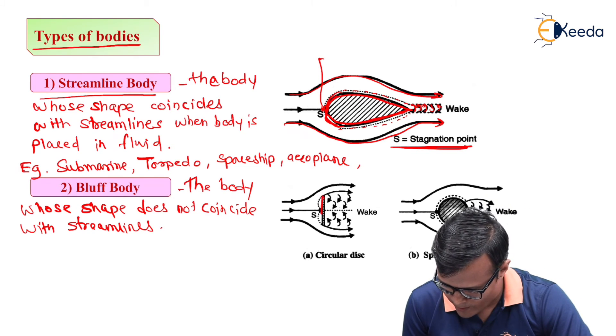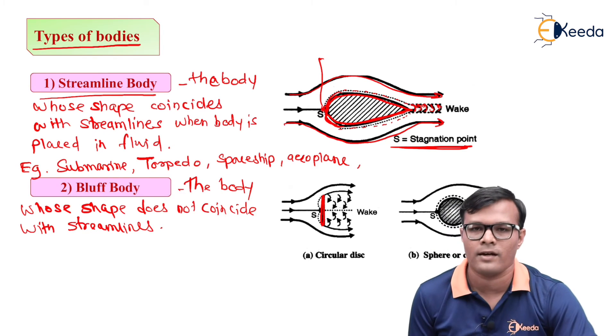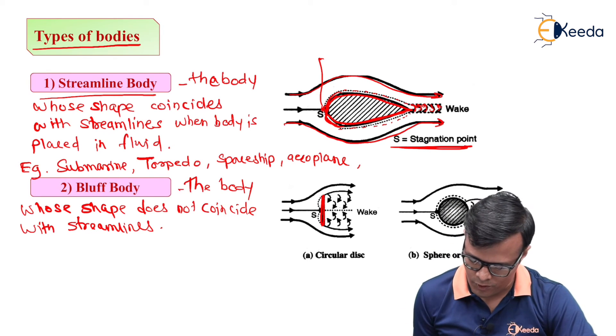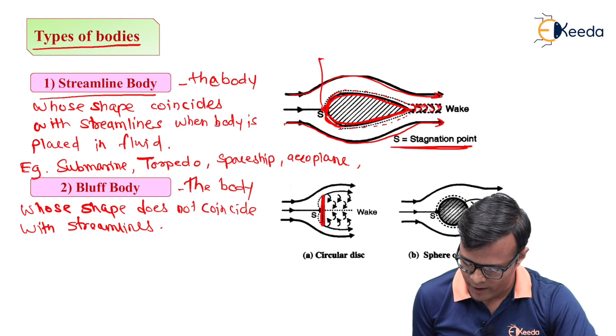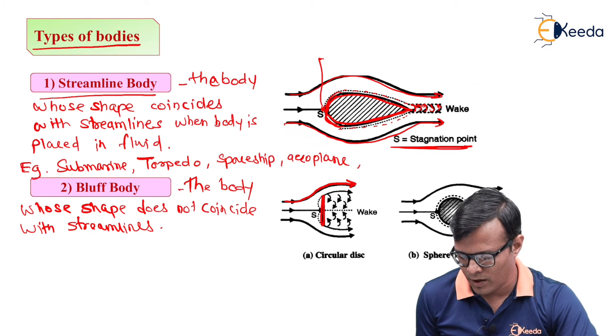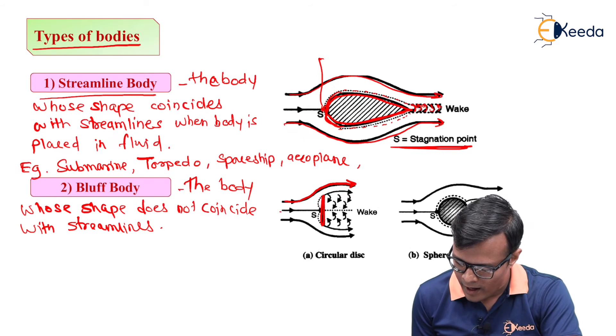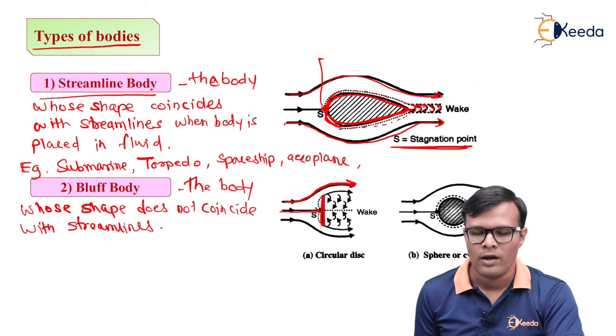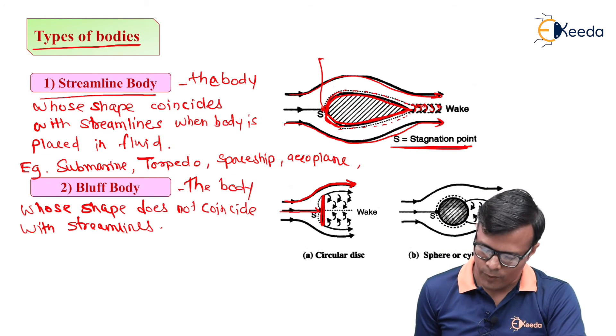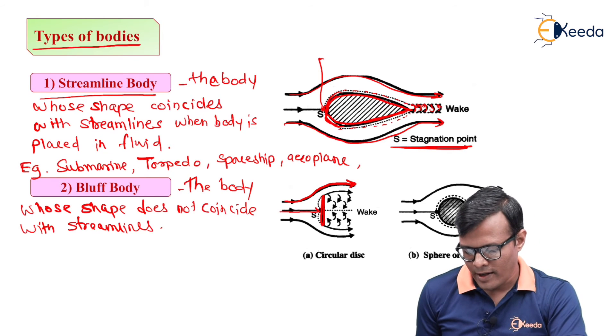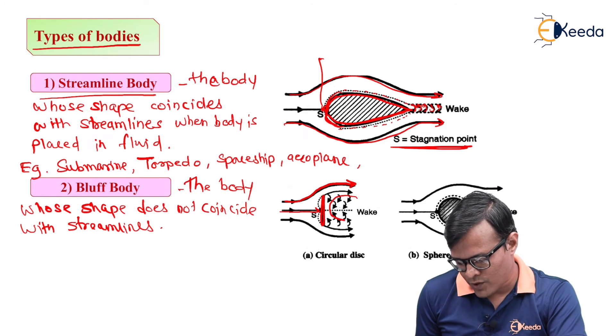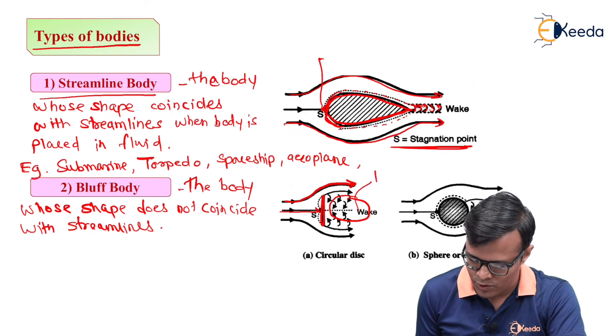We can consider for example purpose a disk which is placed perpendicular to the direction of flow. Then in that case we will have types of streamlines. One is having changed the direction surrounding to the disk and one is exactly perpendicular in which stagnation point S will get generated. And the gap which was formed is low pressure zone.